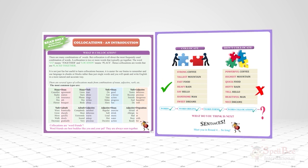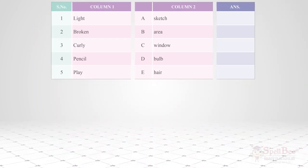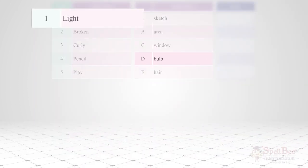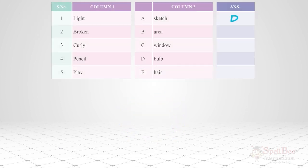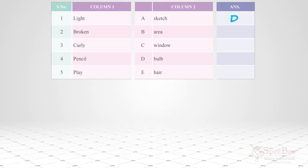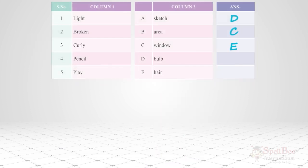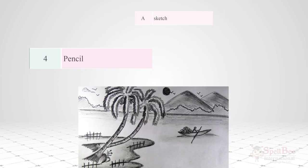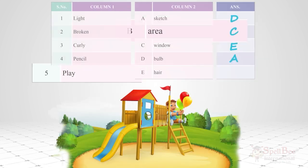To test your knowledge, you match collocations: light bulb, broken window, curly hair, pencil sketch, and play area.